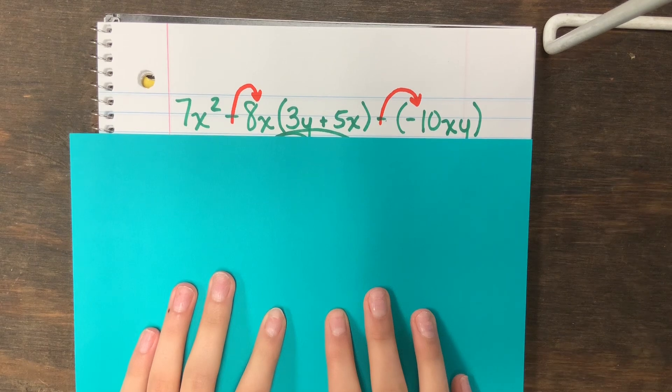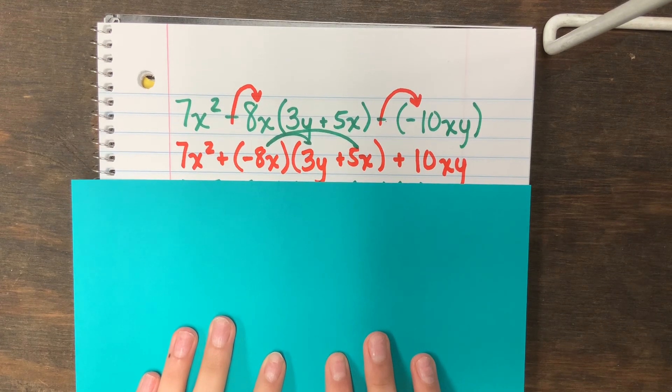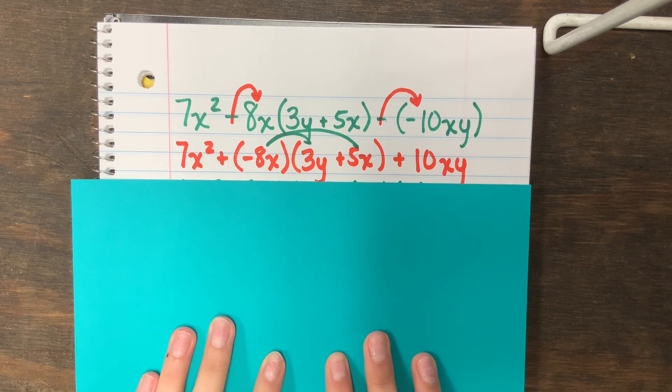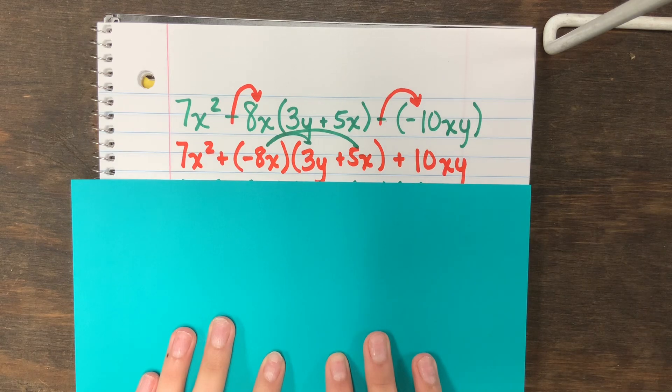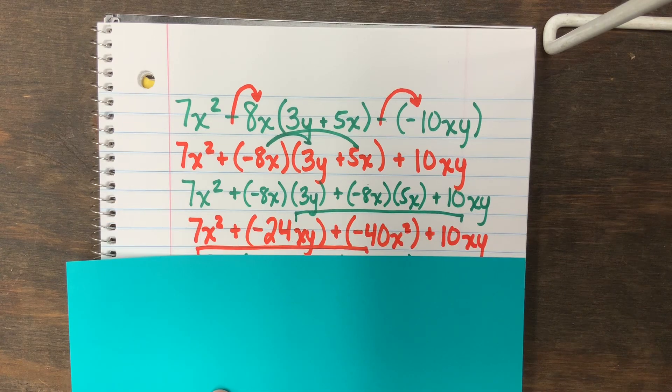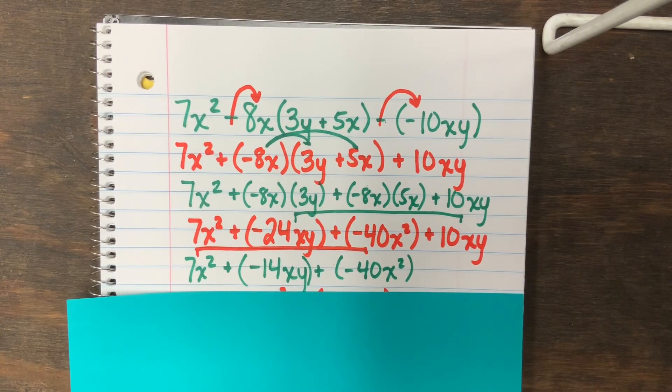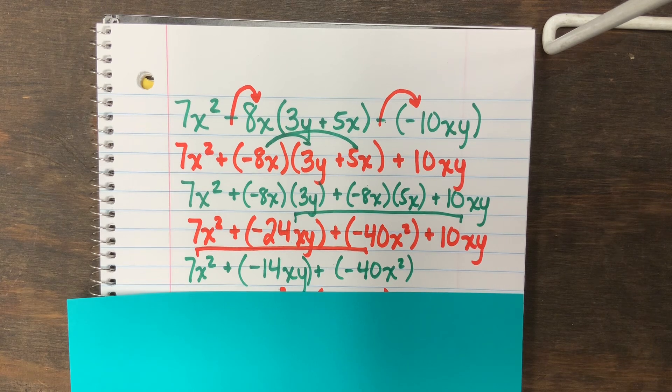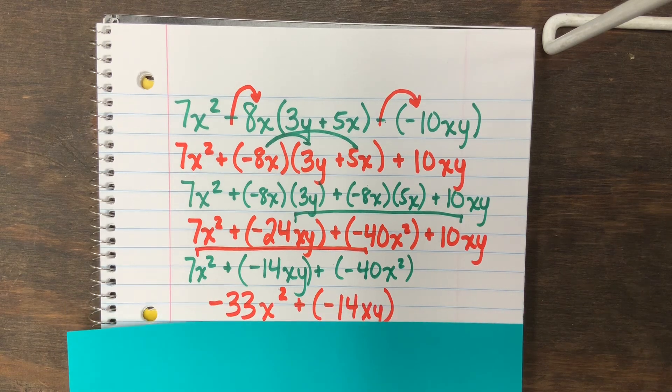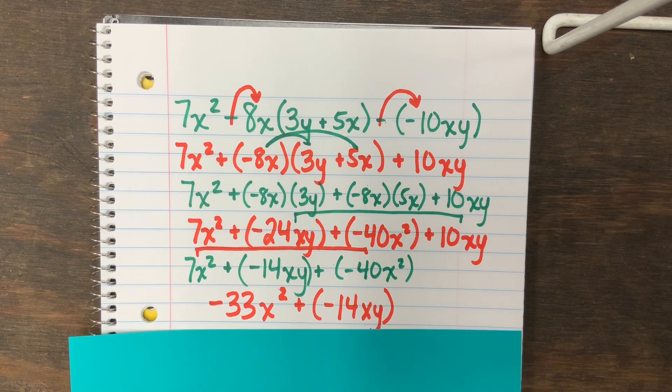So first you have to add the opposite, and then you distribute. You find like terms and then add them. Then you find the other like terms and add them, and then you get your answer: negative 33x² plus negative 14xy.